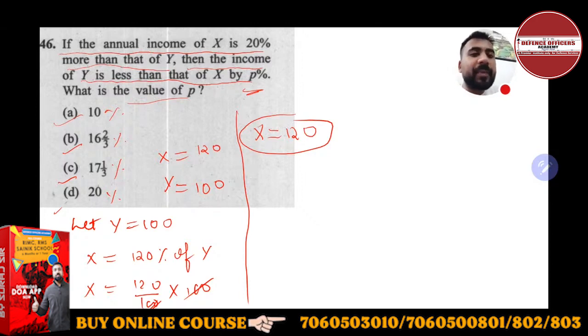So here 120 is nothing but X, and you have to find how much smaller Y is than X. Y is 100. What you have to find is the decreasing percentage, because the value is decreasing from 120 to 100—that's a decrease of 20. So decreasing percentage is nothing but decreasing value...